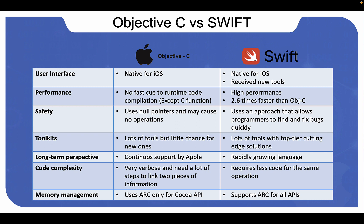Regarding toolkits and community support, developing a successful project is more likely when you have the support, expertise, and knowledge of industry experts. Swift is open source, unlike Objective-C, meaning you can learn how the language works in detail and understand all its pitfalls — and more people means more support. Given Objective-C's long history, developers can find many existing tools, but new ones are unlikely to be created. Meanwhile, finding new toolkits for Swift is much more likely, with tools available from Apple, third-party companies, and the developer community.